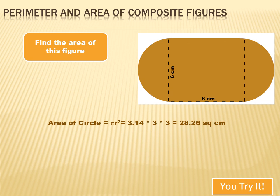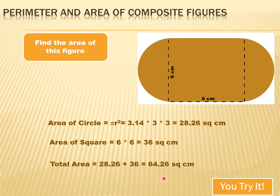So, let's first figure out the area of the circle. The formula is pi r squared. So, that's 3.14 times the radius squared. The diameter is six centimeters, so the radius is three centimeters. So, 3.14 times three times three equals 28.26 square centimeters. Now, I need the area of the square. The square is six centimeters by six centimeters. So, the area is 36 square centimeters. And the total area of the composite shape is the area of the semicircles, plus the area of the square, 28.26 plus 36, equals 64.26 square centimeters.